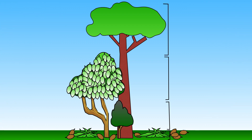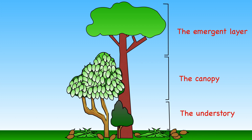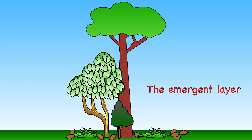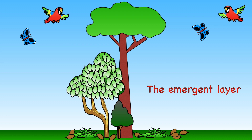The rainforest is made up of four layers: the emergent layer, the canopy, the understory, and the forest floor. The emergent layer is the highest layer and is where the tops of the tallest trees can be seen. Many birds and butterflies enjoy flying here.